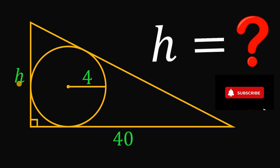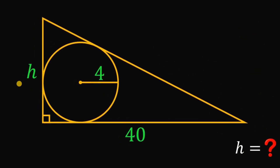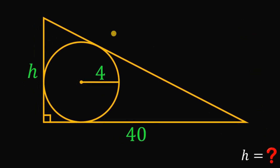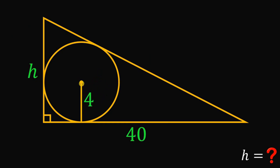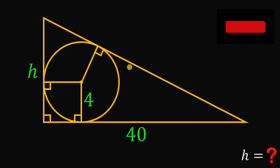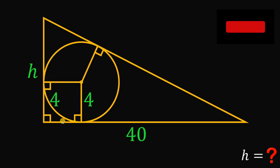Now let's answer this question together. I will show you two solutions to this kind of question. For our first solution, we're going to move this radius right here. We know that if we draw a radius to a tangent line, the tangent line and the radius are perpendicular to each other. Let's draw the radius of the circle directly to the tangent line, or the hypotenuse of this right triangle. Notice that we created a square right here, so all of these sides must be equal to 4 units.